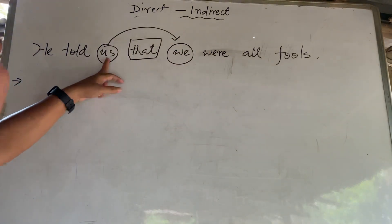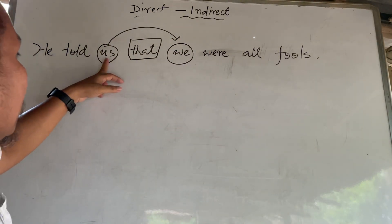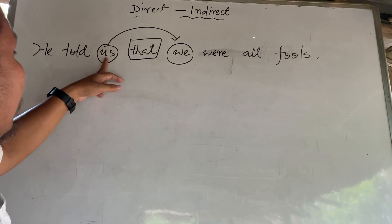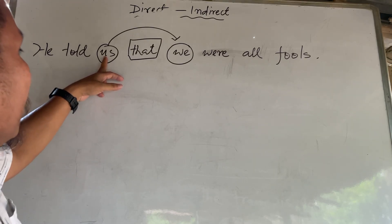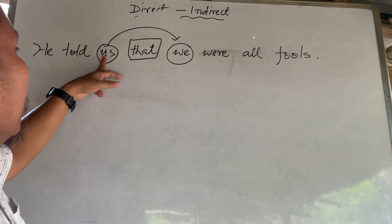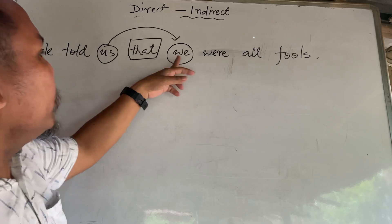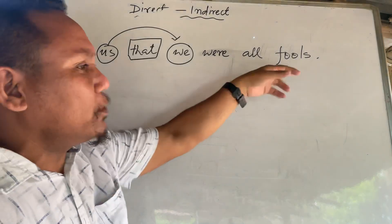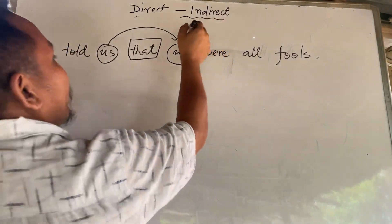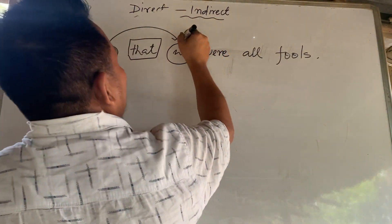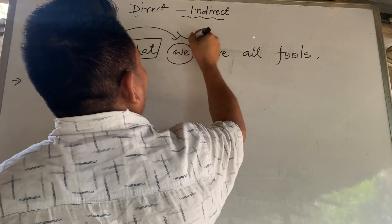What is the reporting verb? Object. The reporting verb is object. The report is my person — second person.